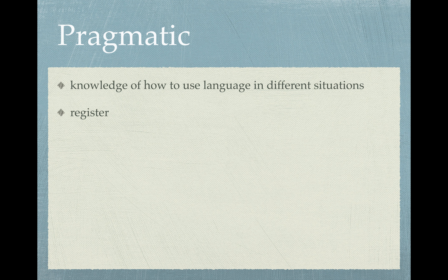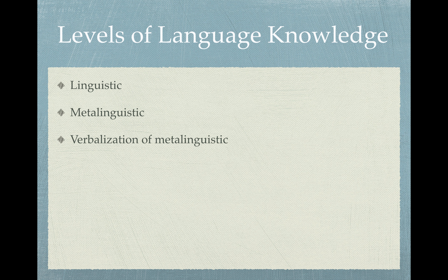Now go to the triangle levels of language knowledge note page. You have three levels there: linguistic, metalinguistic, and the verbalization of metalinguistic.